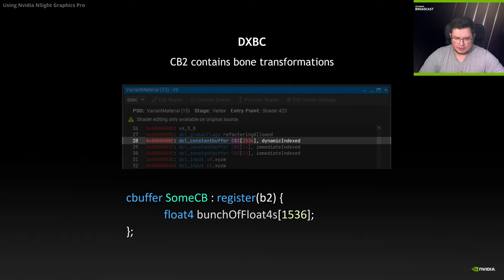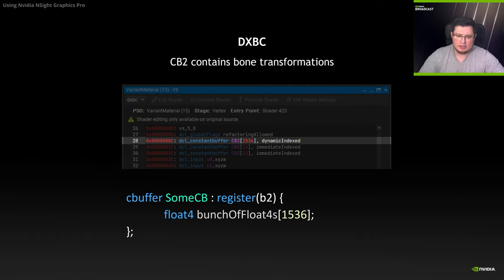If you look at the DirectX assembly, it indicates which constant buffers are being bound. And again, if you had DXIL, you wouldn't need to do this because you would have shader correlation. As you can see, it's a constant buffer with 1536 float4s, and it is also dynamically indexed. These are the biggest clues to identify the culprit resource.